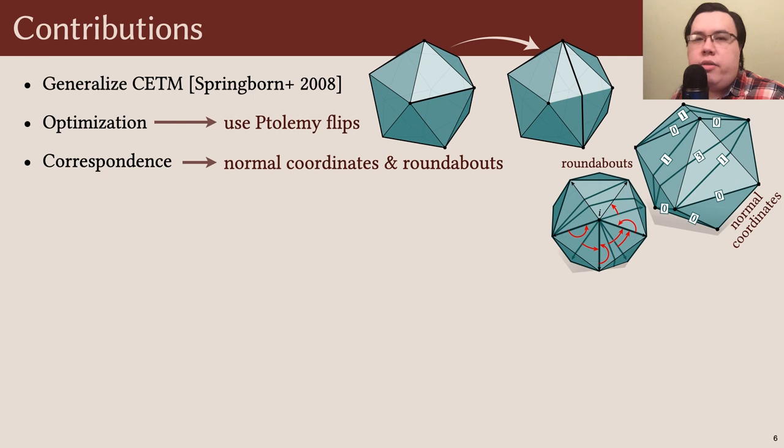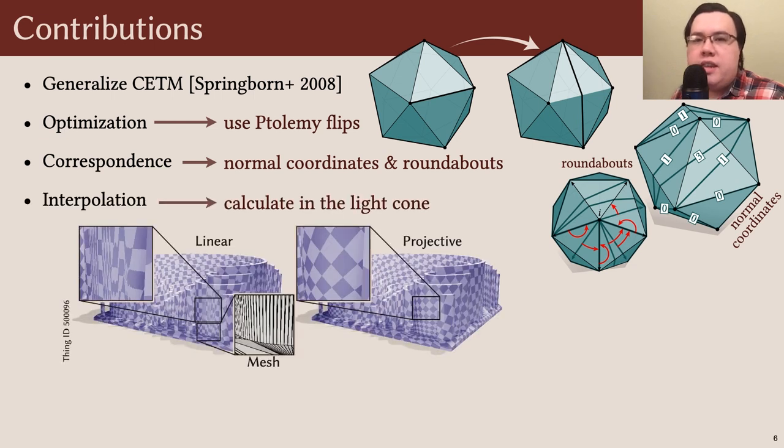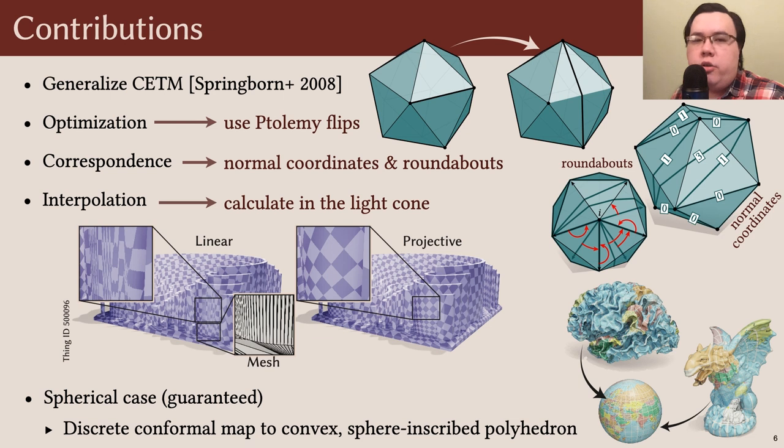To keep track of the correspondence between the original mesh and this mesh with flipped edges, we introduce a robust new data structure consisting of normal coordinates and roundabouts. Third, we propose a new interpolation scheme based on the light cone, which produces much better results than ordinary linear interpolation in this variable triangulation setting. Finally, we also treat spherical uniformization. We give the first algorithm that's guaranteed to compute an exact discrete conformal map to a convex sphere-inscribed polyhedron.